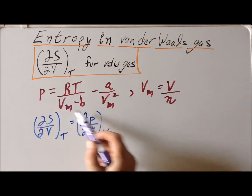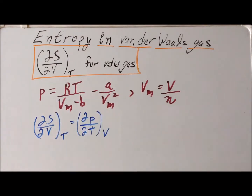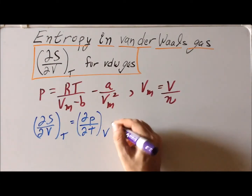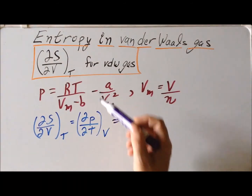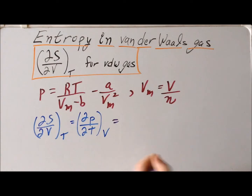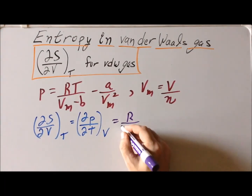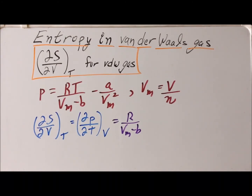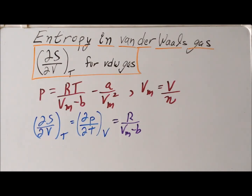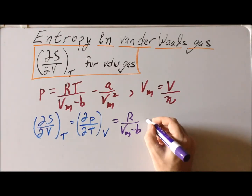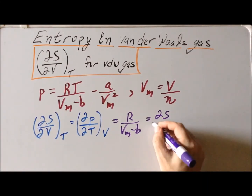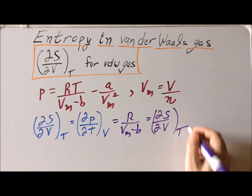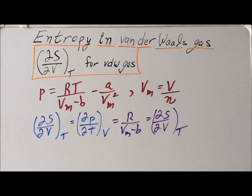We can take the partial derivative of P with respect to T for the van der Waals expression. In the first term, we have T multiplied by a constant R divided by (V_M minus b). In the second term, temperature does not appear at all, so that derivative is exactly zero. So we have determined the value of this partial derivative, and by the Maxwell relation it equals the derivative we were asked to find — (∂S/∂V) at constant T for the van der Waals gas equals R divided by (V_M minus b).